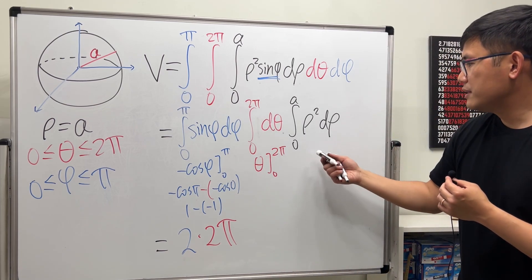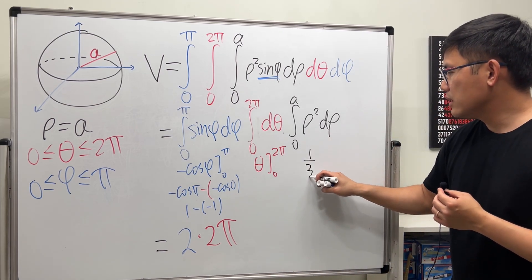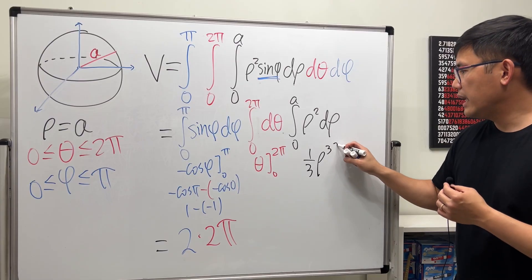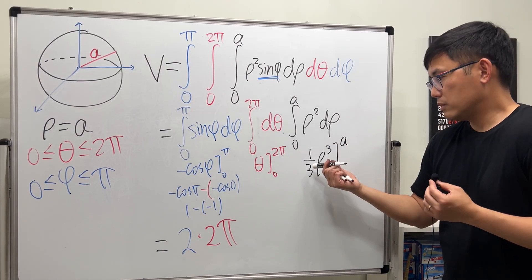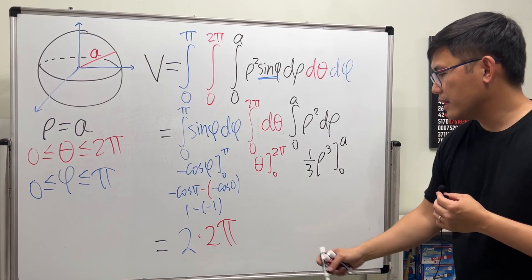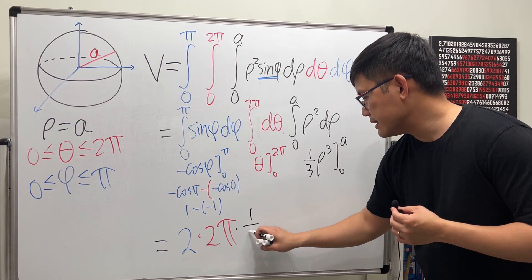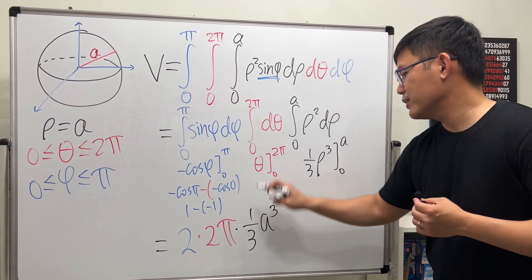Finally, work this out. We get 1/3 ρ to the third power. And then we plug in 0 to a. Plug in a. That's all we need. Plug in 0 is 0. So we multiply by 1/3 a to the third power.